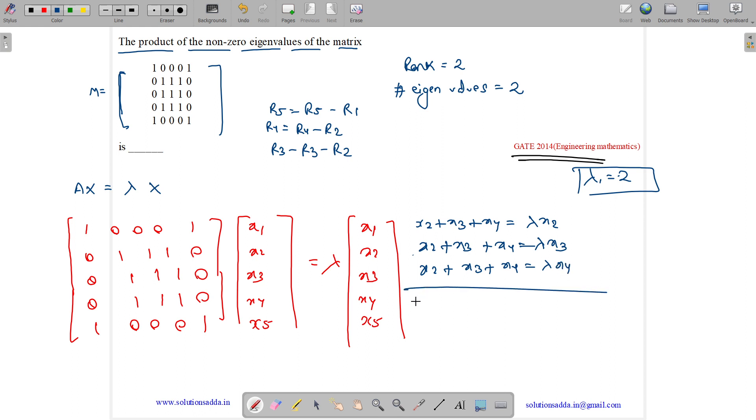Summing this up and taking 3 as common, you will get X2 plus X3 plus X4 equals to, taking lambda as common, you will get X2 plus X3 plus X4. Cancelling this out, you will get lambda 2 equals to 3.